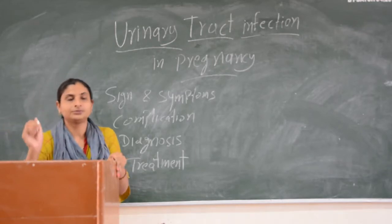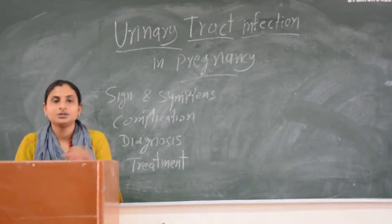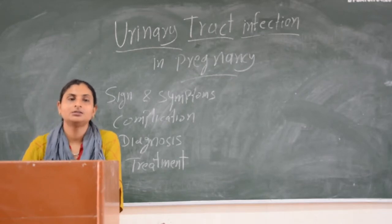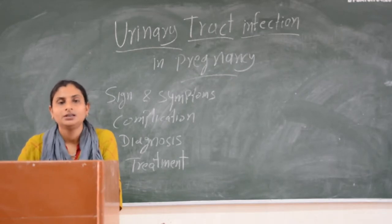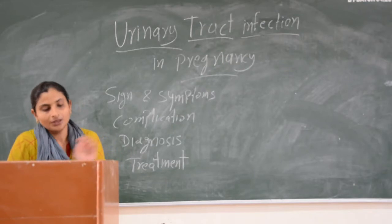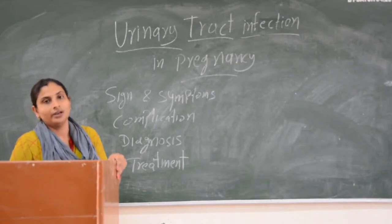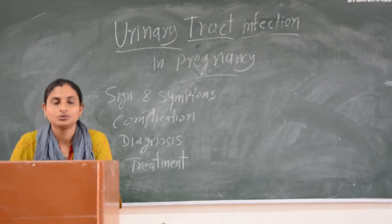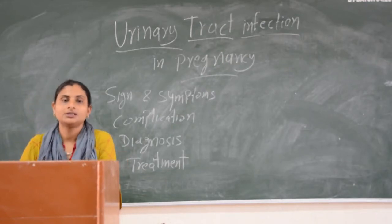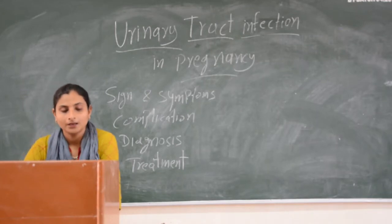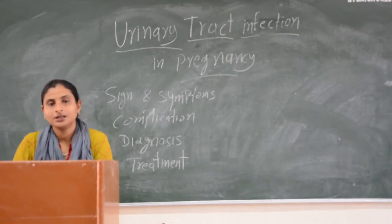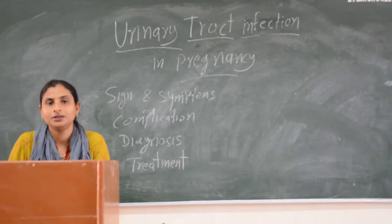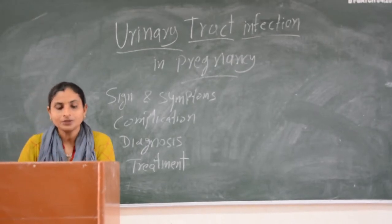In urinary tract infection, bacteria are most commonly involved. Mainly it is Escherichia coli bacteria, which is the main cause. Other bacteria such as Klebsiella pneumoniae and Enterococcus can also be involved.